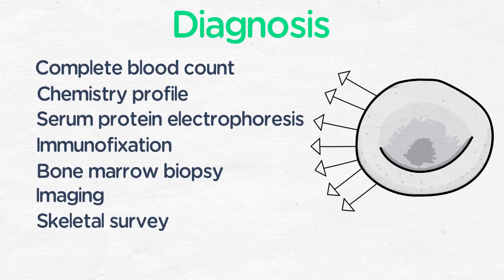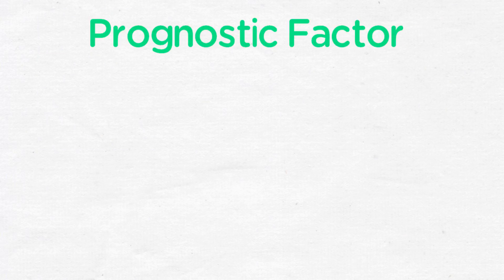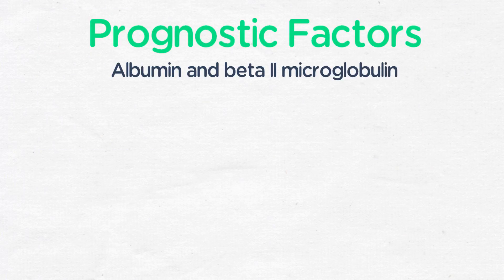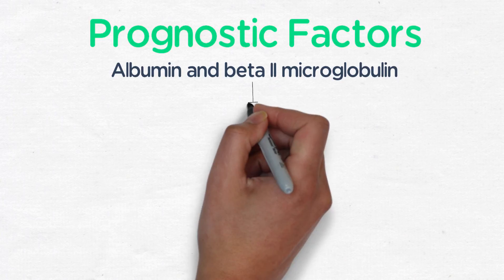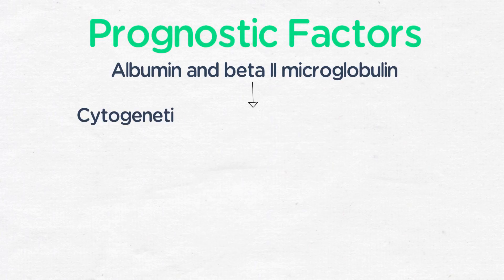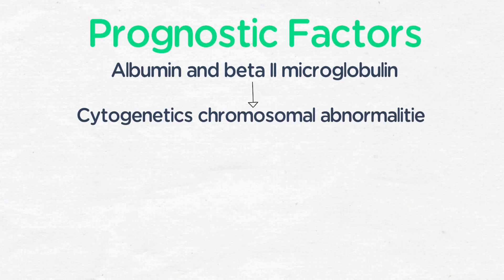Once you diagnose the patient, you want to look at staging systems and prognostic factors, including albumin and beta-2 microglobulin — that would be the international staging system. You also want to look in the bone marrow at cytogenetics and FISH analysis to look at prognostic markers for those patients.